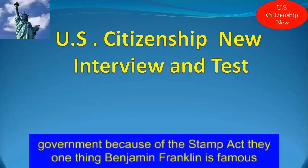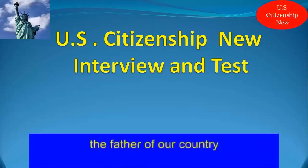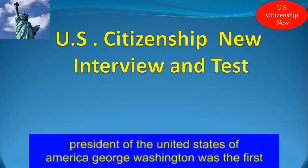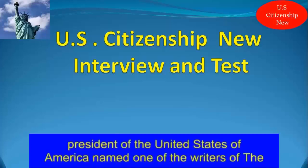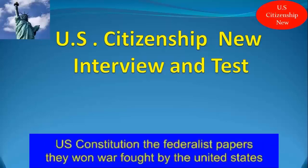Name one thing Benjamin Franklin is famous for. He was the oldest member of the Constitutional Convention. Who is called the father of our country? George Washington is called the father of our country. Who was the first president of the United States? George Washington. Name one of the writers of the Federalist Papers. James Madison. What group of essays supported passage of the U.S. Constitution? The Federalist Papers.